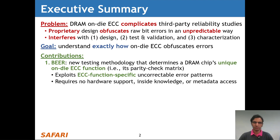First, we introduce BEER, a new testing methodology that determines a DRAM chip's unique on-die ECC function — in other words, its parity check matrix. BEER exploits ECC function-specific uncorrectable error patterns, and requires no hardware support, inside knowledge, or metadata access.